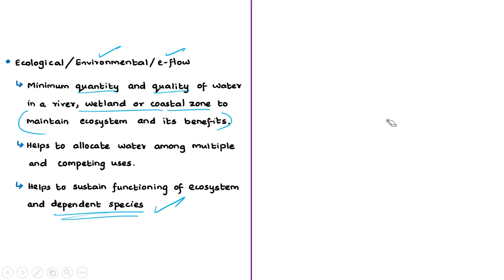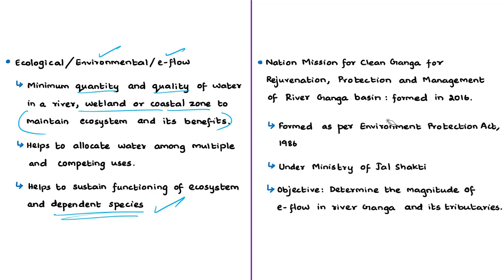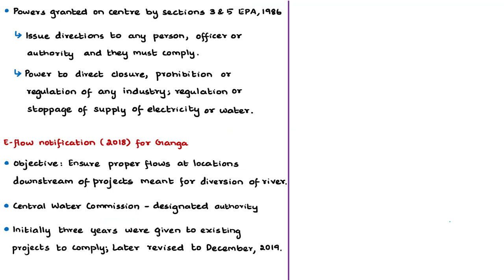In 2016, the center formed an authority called the National Mission for Clean Ganga for rejuvenation, protection, and management of the River Ganga basin, as per the provisions of the Environment Protection Act of 1986. It comes under the Ministry of Jal Shakti. One of the objectives of this authority was to determine the magnitude of ecological flow in river Ganga and its tributaries required to be maintained at different points at all times. Maintaining flow was essential to ensure water quality and environmentally sustainable rejuvenation and management of river Ganga. The Environment Protection Act of 1986, under sections 3 and 5, confers powers on the center to issue binding directions to any person, officer, or authority.